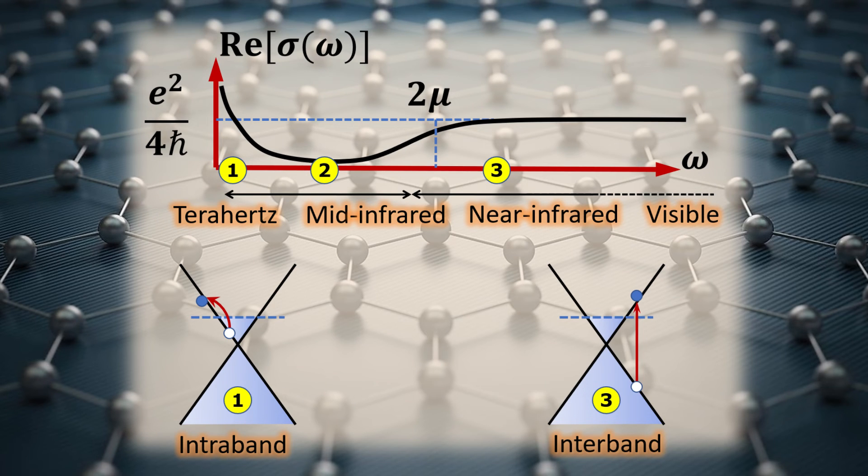In the high-frequency regime 3, which typically resides in the near-infrared to visible spectrum, the photon provides the energy for direct electron transitions from the valence to the conduction bands. This interband optical transition produces a universal optical conductivity of e squared divided by 4h bar as shown. This universal conductivity is responsible for the emergence of the fine structure constant in the optical absorption of graphene.